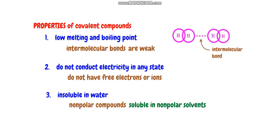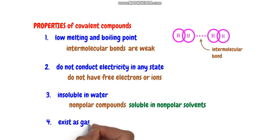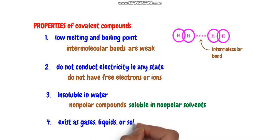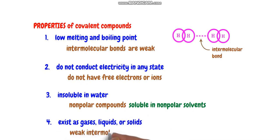These are the properties of covalent compounds. Other examples include ethylene and acetylene. Covalent compounds can exist in gaseous, liquid, or solid state, having weak intermolecular forces.